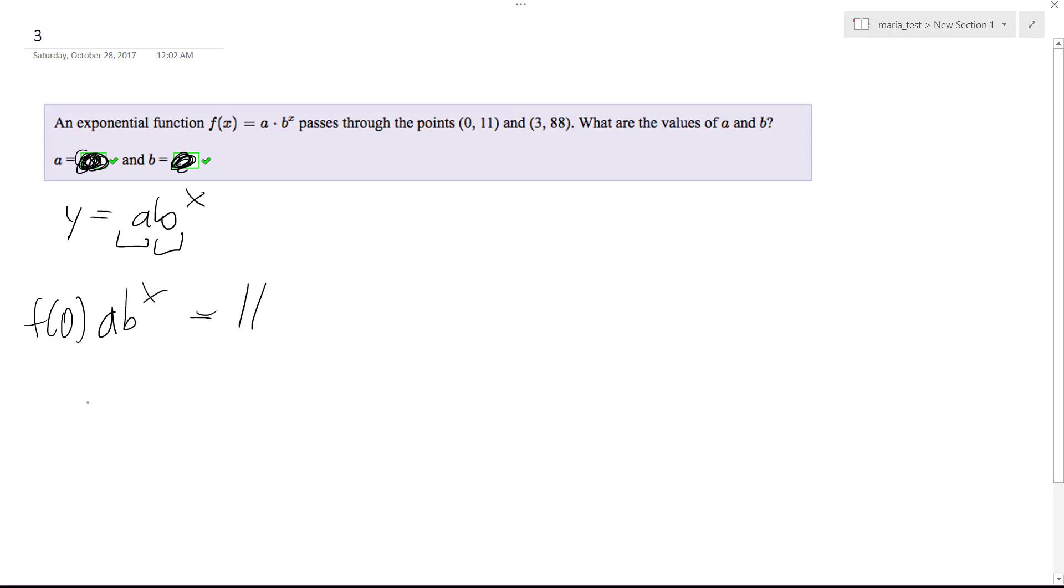So one key step here is a times b, anything raised to the 0 is going to be 1, no matter what. So that means that a times this is equal to 11, so that means that a has to be 11.